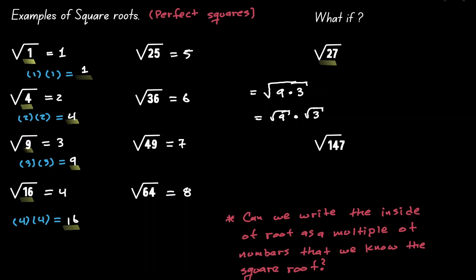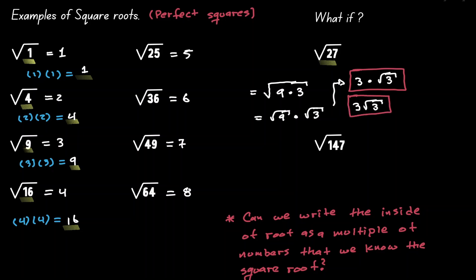The advantage of this is that we know what the square root of 9 is — we've defined that as 3. So now we can write this down as 3 times the square root of 3, and we have properly simplified our square root. Another way to rewrite this is to put the 3 in front of the square root symbol: 3√3. So if we cannot find the square root of a value right away, we have to think of ways to rewrite the inside of the square root.